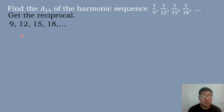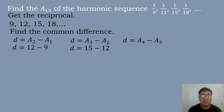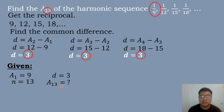Since the harmonic sequence becomes an arithmetic sequence, we can compute for the value of the 13th term using the formula of arithmetic sequence. We get the common difference by subtracting the 2nd term minus the 1st term: 12 minus 9 equals 3. 15 minus 12 equals 3. 18 minus 15 equals 3. Therefore, the common difference is equal to 3. The given values are: first term = 9, n = 13, common difference = 3.